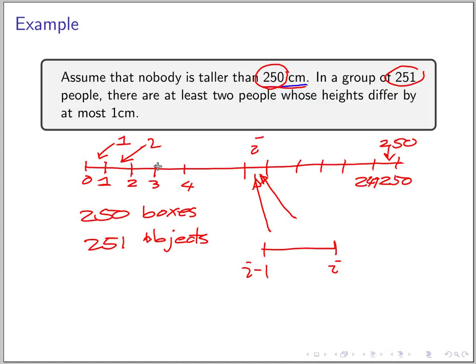So you need to deal with the boundary a little bit. The lower end is for the previous box. So if they fall into the same i-th box, the height will be greater than i minus 1 and no larger than i. If you subtract, you know that the height of these two people differ by at most one centimeter. So that's how to use the